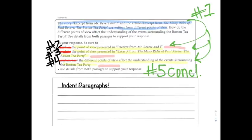In our body paragraphs, we have to support our yellow statements with our red evidence. Our evidence comes from direct quotes and explanations. We get our quotes from the passages and we explain these quotes and describe how this evidence supports our yellow claim or statement.